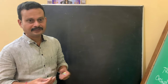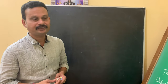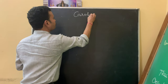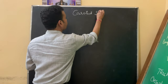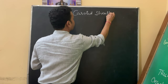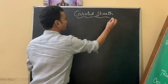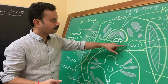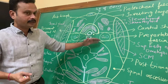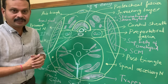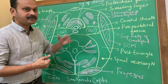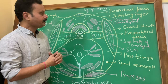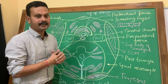Let us now discuss about the carotid sheath. It is a tubular investment of deep cervical fascia containing vessels and nerves.